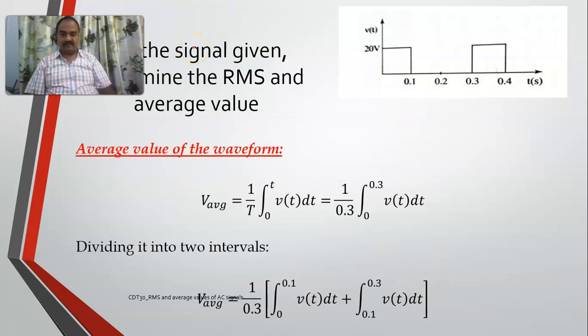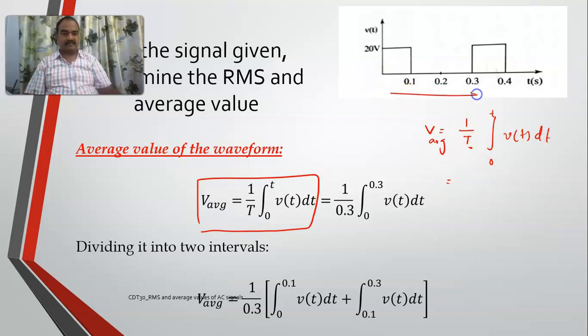Having said this, we will determine the average value of the waveform. This is the formula: V average is equal to 1 by t, integral 0 to t, V of t dt. This t stands for the time period. In this case, the time period is 0.3 and 0 to t indicates the signal.